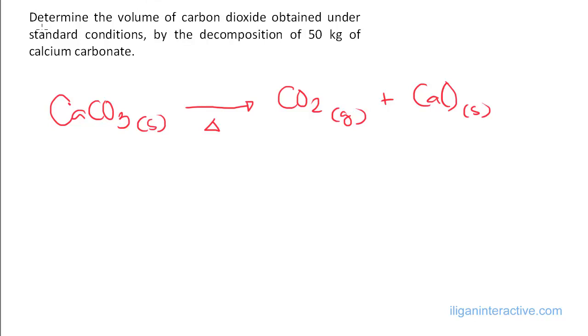We start with what is given to us: 50 kilograms of CaCO3. To use this balanced equation, we need to work with moles, so step one will be converting these kilograms into kilomoles.